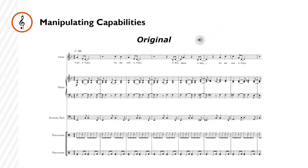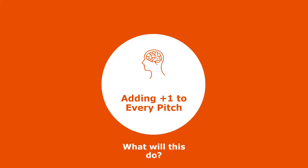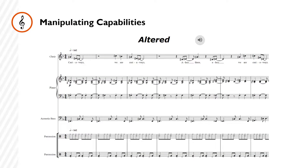To demonstrate Music AI's ability for music manipulation, listen to the musical excerpt — the song Castaways from the Backstreet Boys. Through importing this file into Music AI, we can take every pitch element and add one to it. Doing this would effectively transpose every note up by a half step, though this will not change the notated key. Exported back into Music XML, listen to how this change affects the sound.